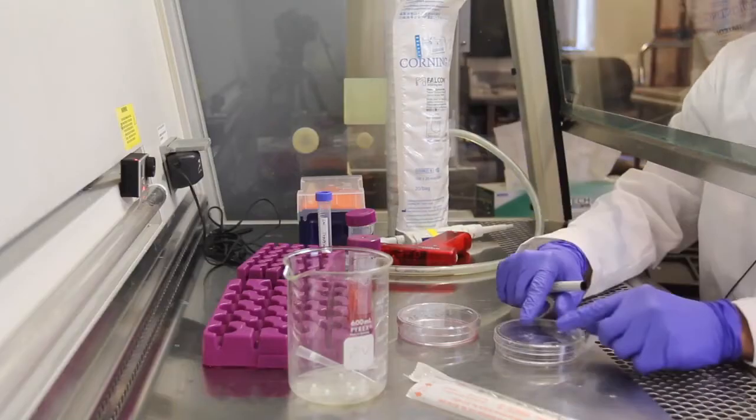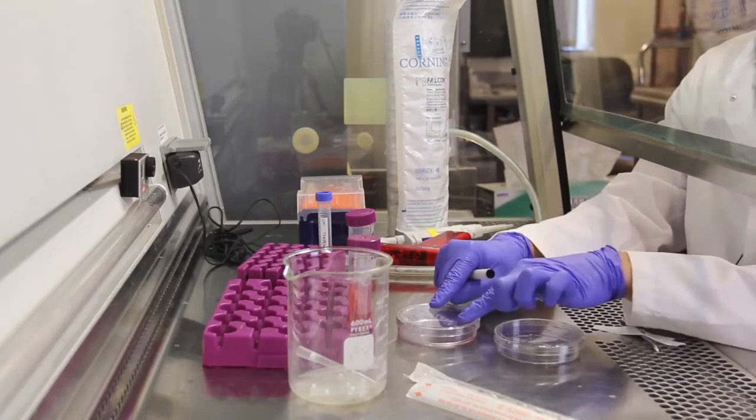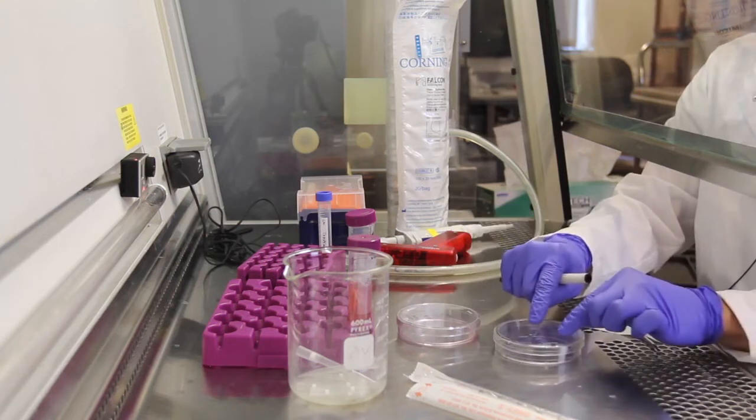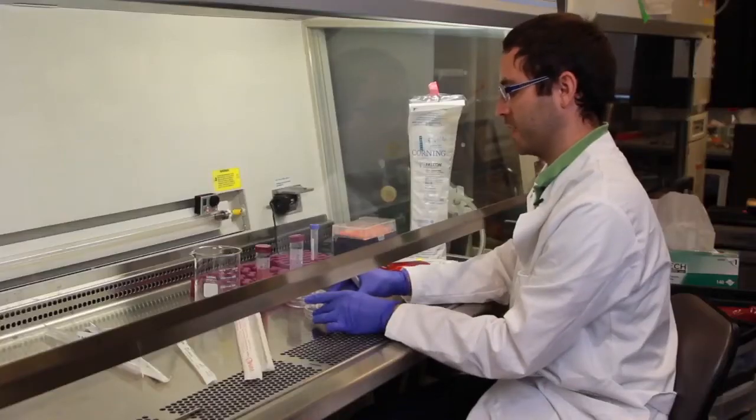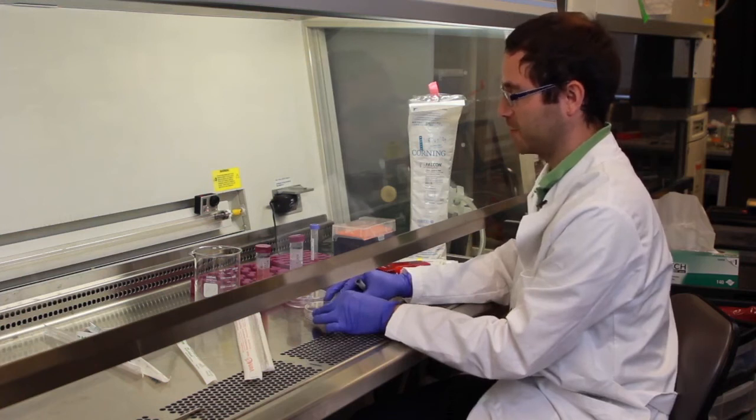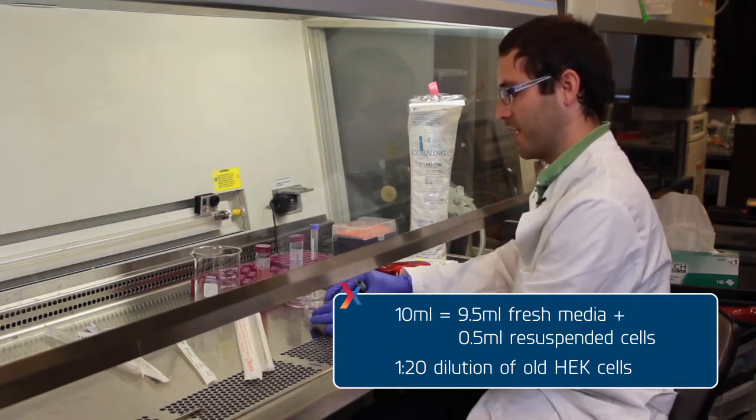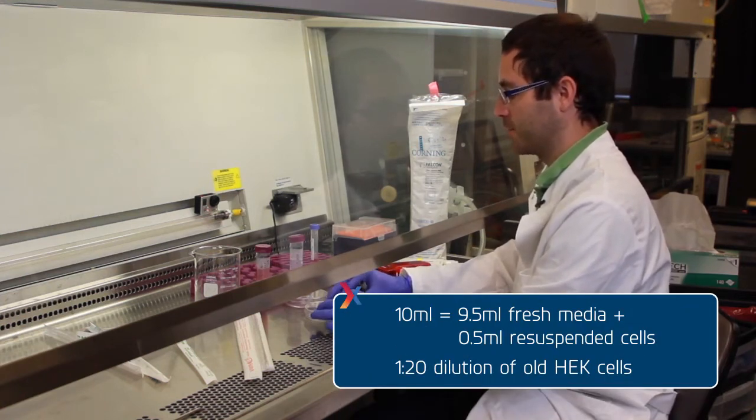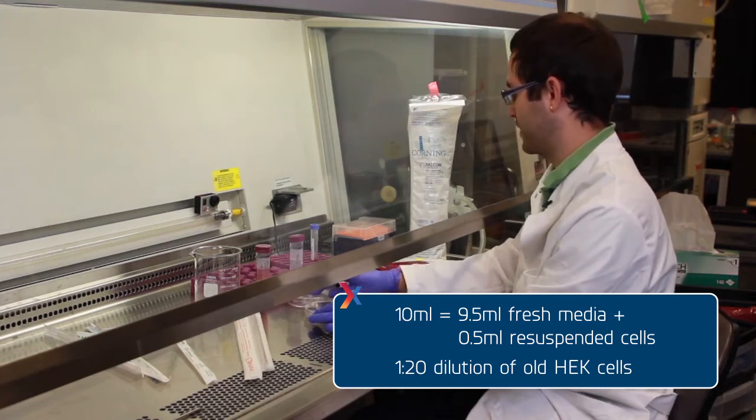A 1 to 20 split basically means that you take the original cells and dilute them by 20 fold onto this new plate. Since the final volume will be 10 milliliters, a 1 to 20 dilution means you'll need 9.5 milliliters of fresh medium and 0.5 milliliters of resuspended cells.